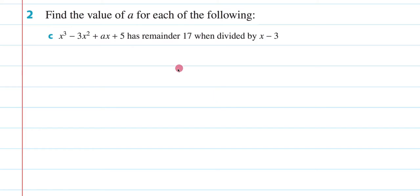We are going through exercise 6c, and in this video I'll be answering question 2c, which says find the value of a for each of the following. So here we have our polynomial which has a remainder of 17 when divided by x minus 3.